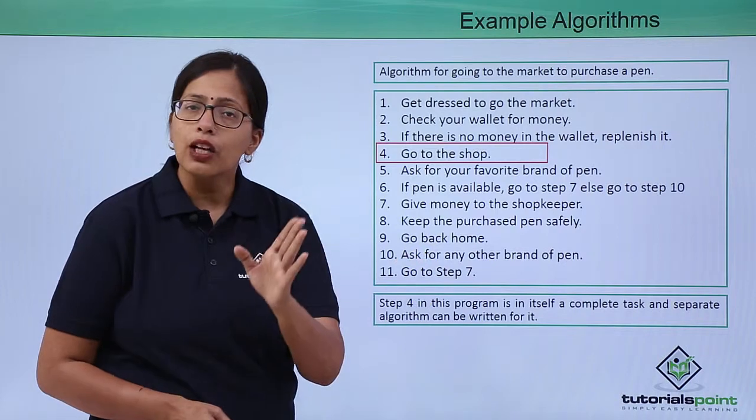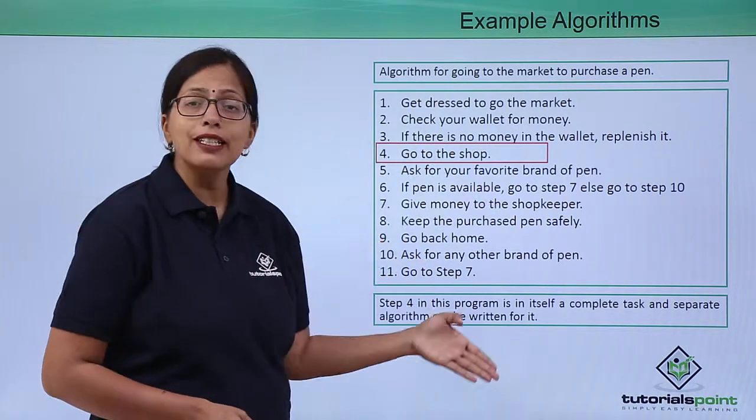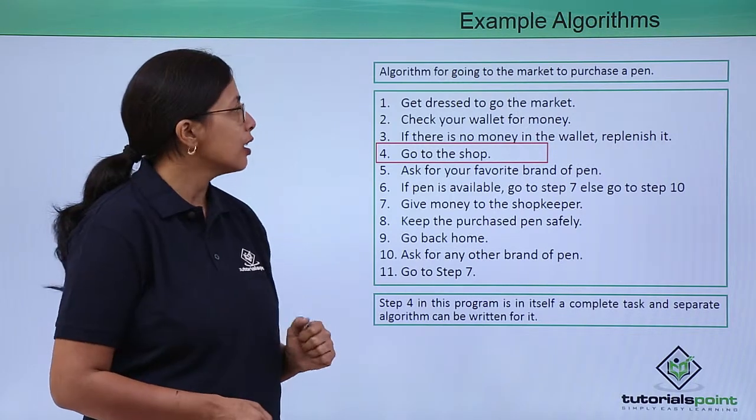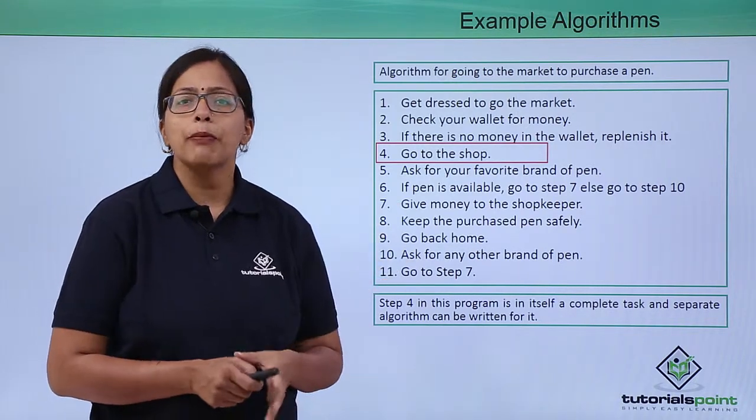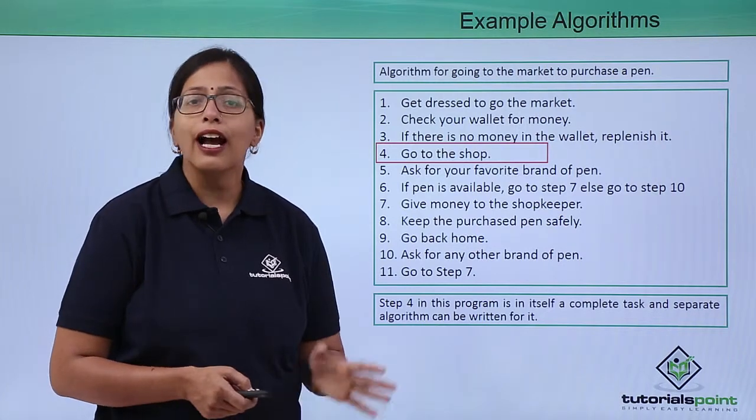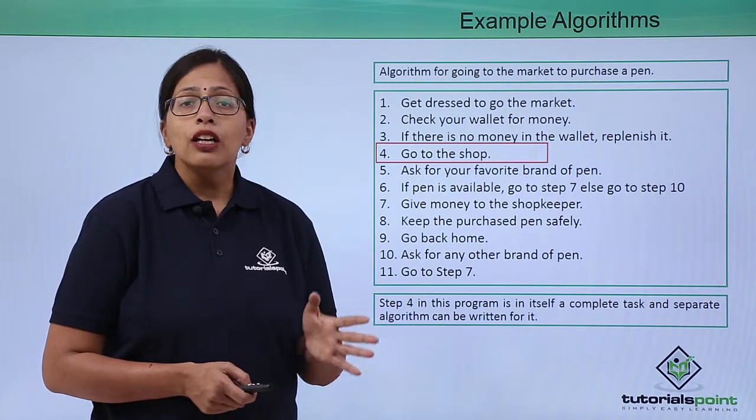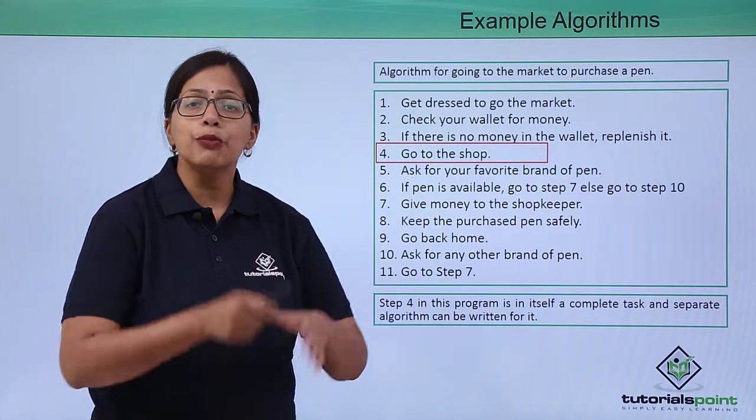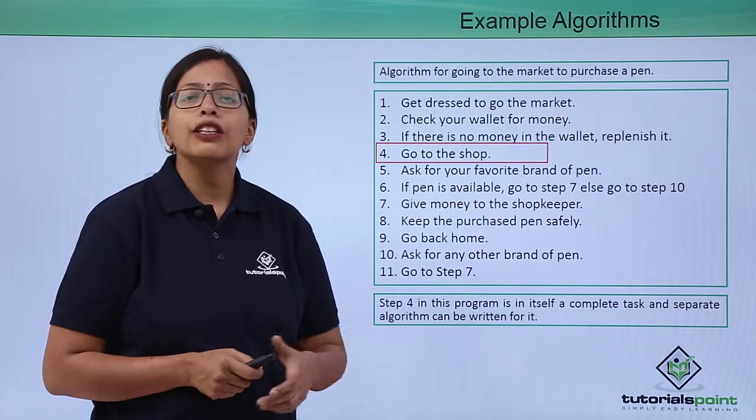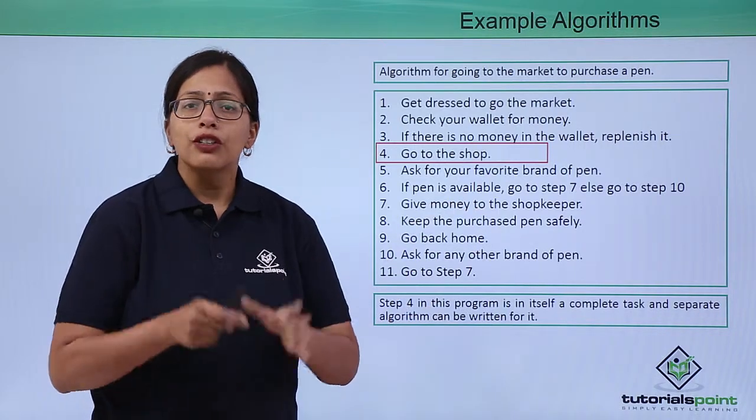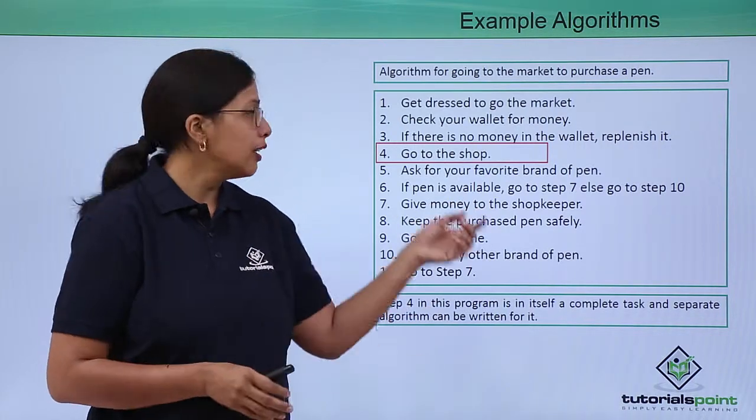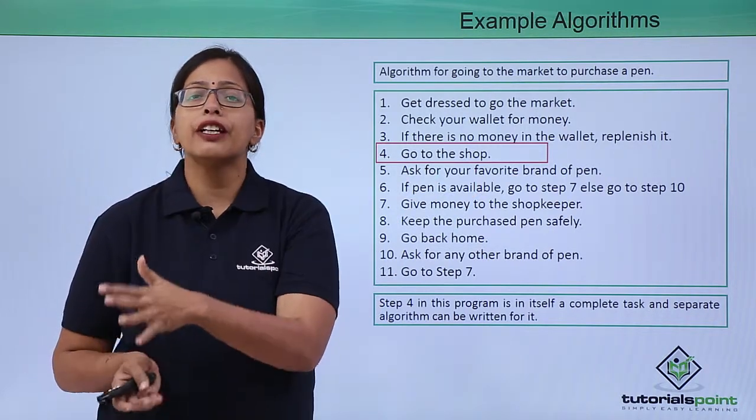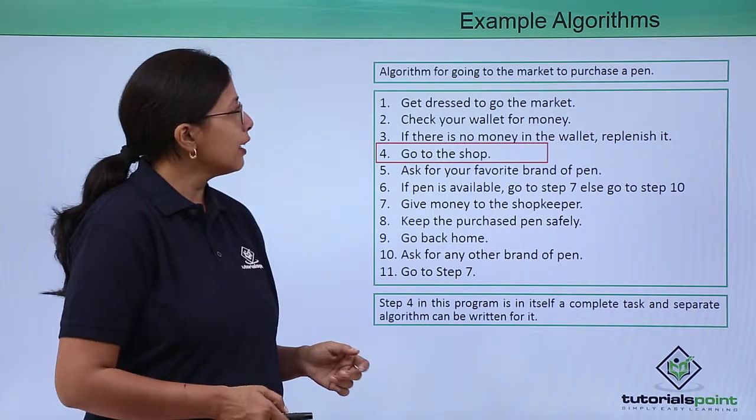You have asked for any other brand of pen and then again you give money, purchase it, keep it safely, and go back home. So this is a complete algorithm for buying a pen from the market. Now you will see that I have highlighted step 4. I have done that to emphasize that going to the shop is itself a complete process. If this algorithm were a part of a real solution, then step 4 would actually be implemented as a separate algorithm.